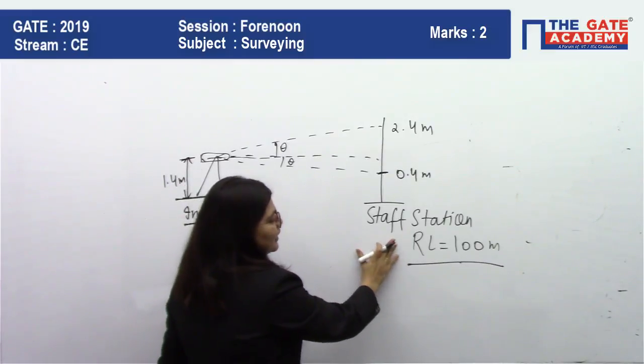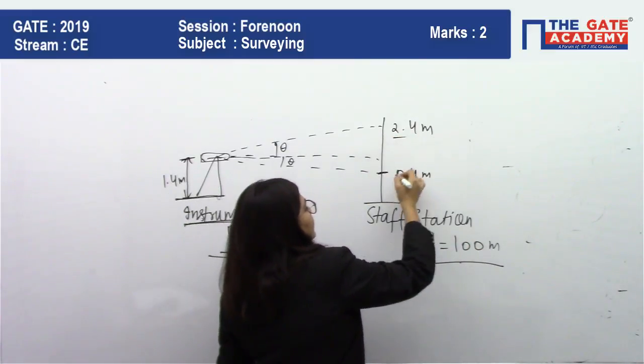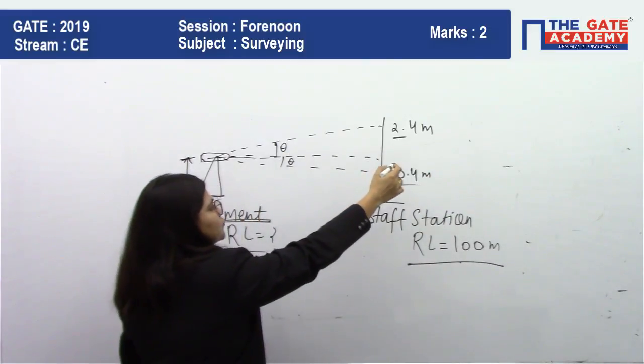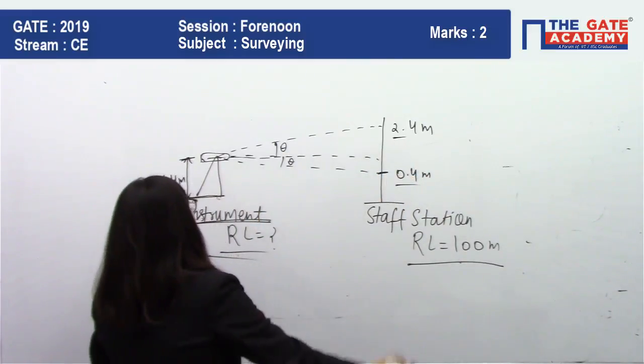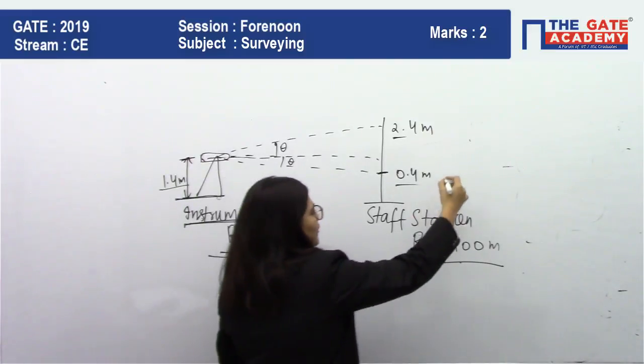The staff station RL is given to you as 100 meters. The readings at some angles are 2.4 and 0.4, and the height reading of 1.4 meters is given.